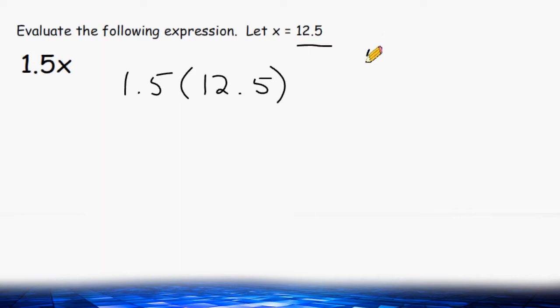So let's start by writing 12.5 and then underneath writing 1.5. We have to multiply these values together.